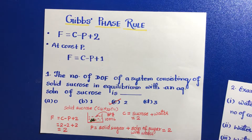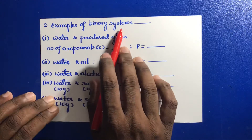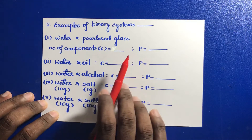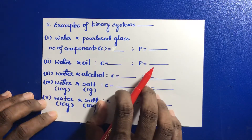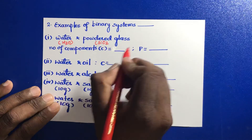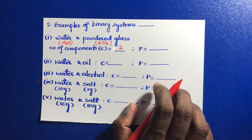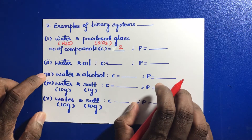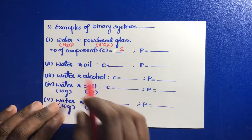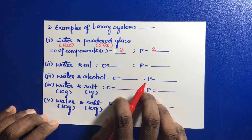Now let's do some more examples. These are examples of binary systems, and in each of these we have to find the number of components and number of phases. First is water plus powdered glass. Water, that is H2O, is one component, and powdered glass, SiO2, is the other component. Total components is 2. Water and powdered glass will make a heterogeneous mixture because powdered glass will not dissolve into water — they will not form a solution. That's why it will have 2 phases: one will be water and the other will be SiO2.